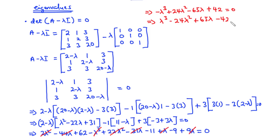We have a cubic equation and therefore we obtain 3 values of lambda. We can test values like lambda equals 1, −1, 2, −2. Using a scientific calculator, the roots are lambda equals 1, lambda equals 2, and lambda equals 21. These are the eigenvalues of A.